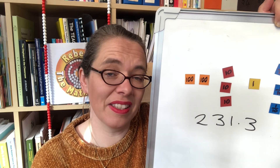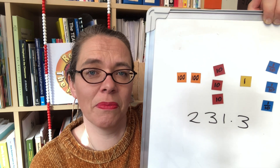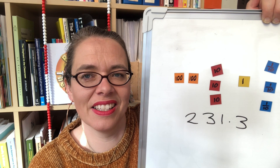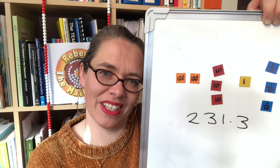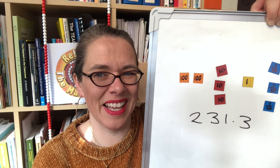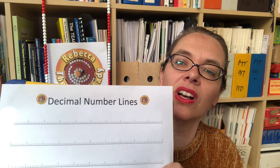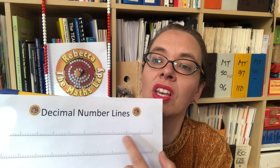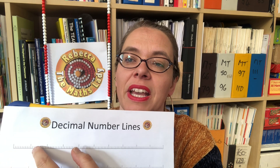If the child you're working with is coping comfortably with these exercises, they've got a good foundational understanding of decimal numbers to one decimal place. Two decimal places is a little harder. Here are some number lines for decimal numbers to two decimal places, and of course they're just cut into a hundred parts, with each tenth being cut into ten parts.